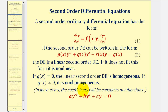And if g of x doesn't equal zero, we say it's non-homogeneous. But in our case, the coefficients will be constants, not functions of x. So p of x will be a constant, which we'll call a, q of x is a constant, which we'll call b, and r of x is a constant, which we'll call c. So all the linear second order homogeneous differential equations that we'll be solving will have constant coefficients.